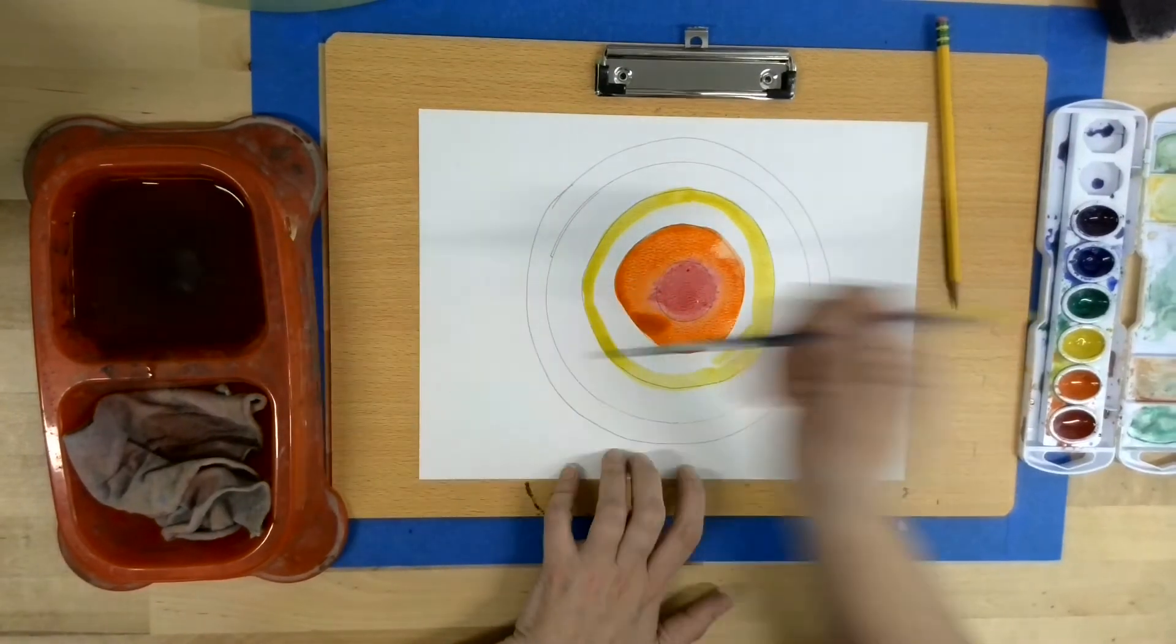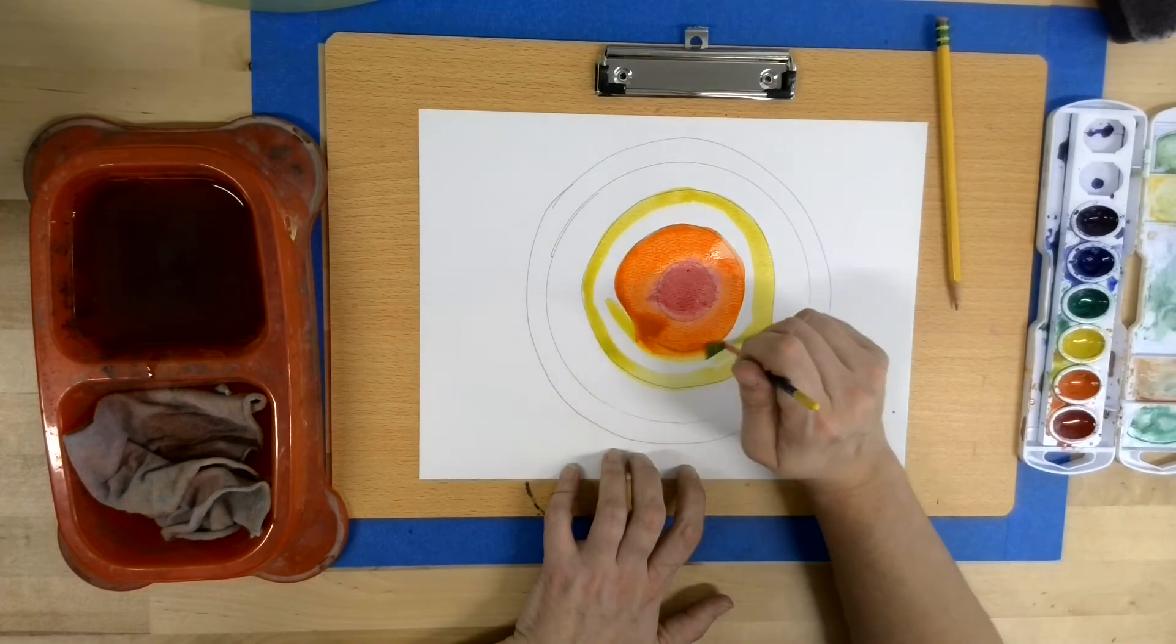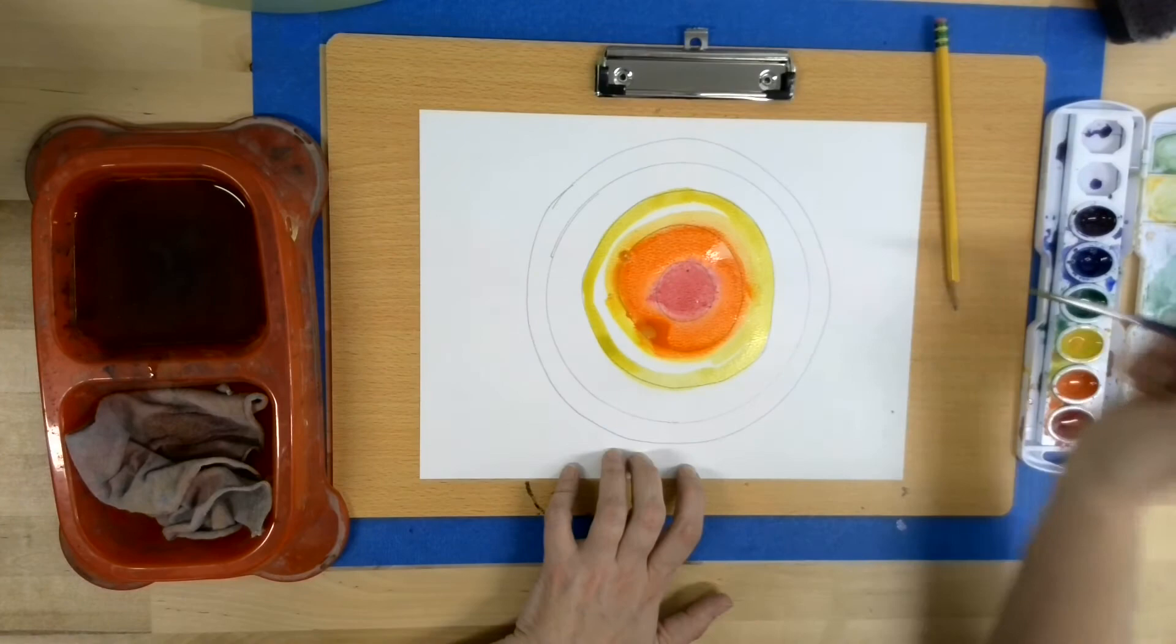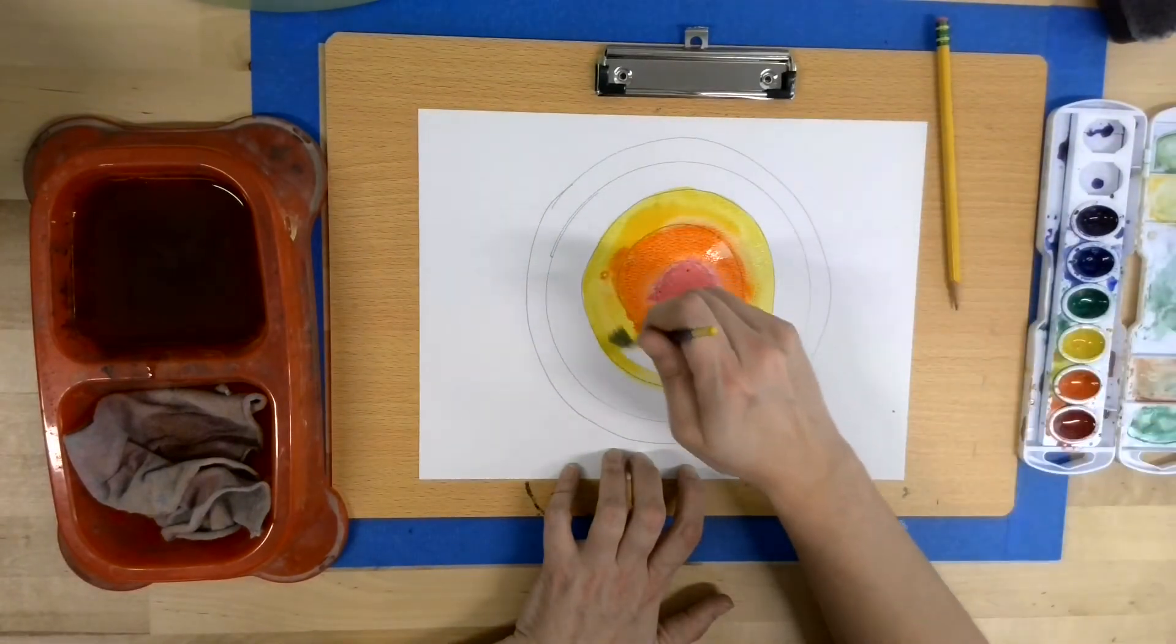You will notice when you have two parts of paint that are wet, sometimes it will blend together. In this case, I call it a beautiful mess.